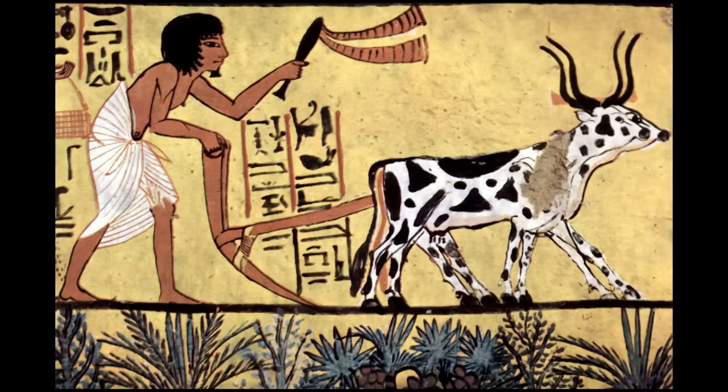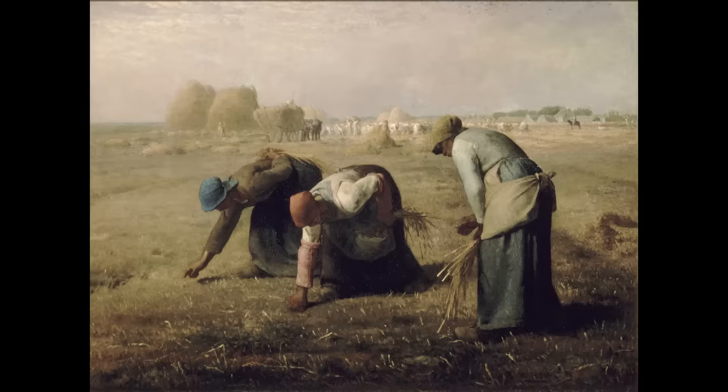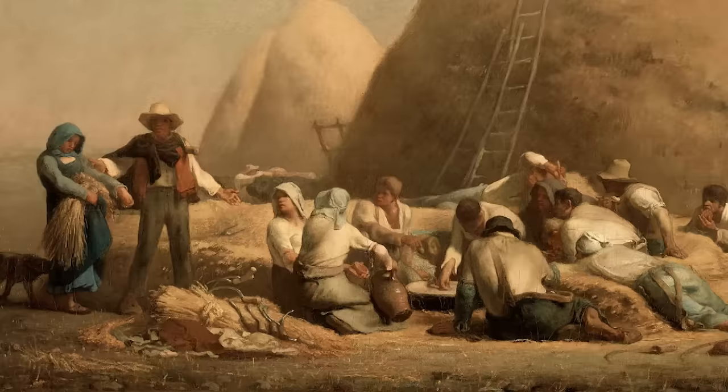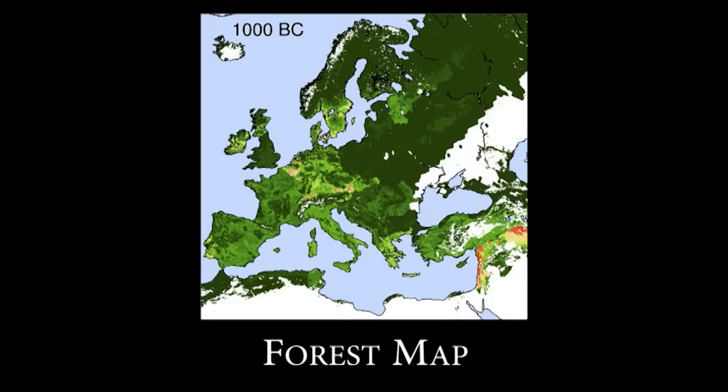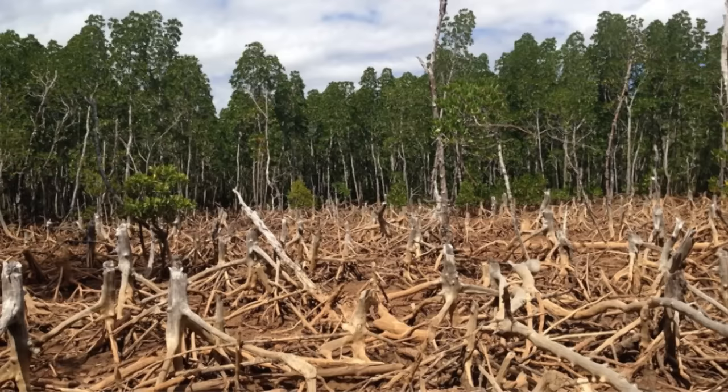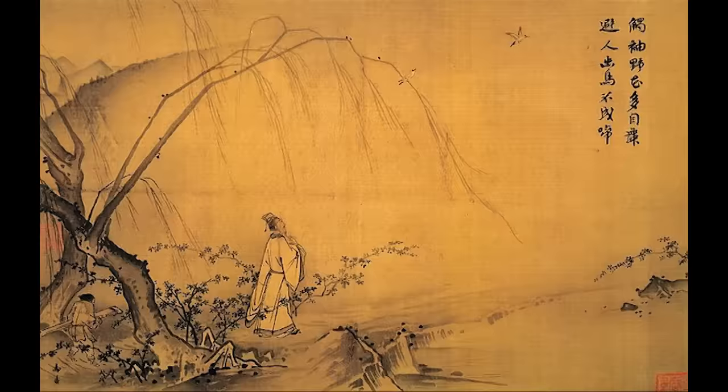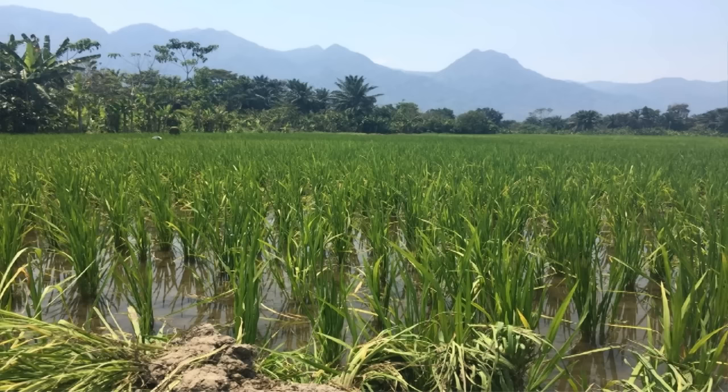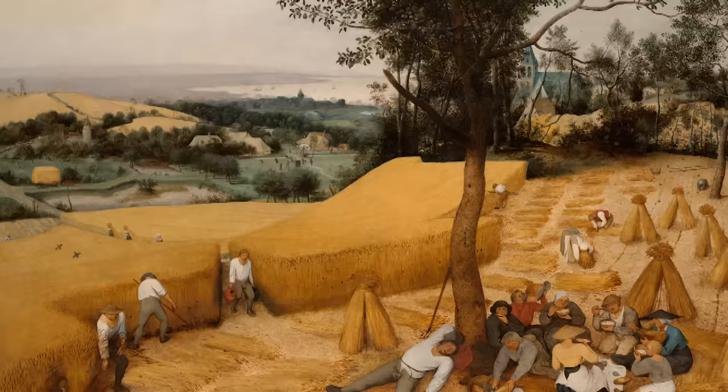10,000 years ago, we invented farming, and this was a big hit — everyone started doing it. To make way for farms, we chopped down the trees. The carbon in the trees went into the air, raising CO2 levels. The Chinese invented rice farming, and rice farming produces methane, which is a greenhouse gas.